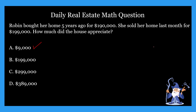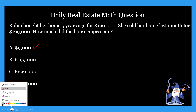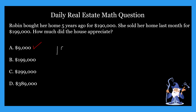There's no tricks going on here. The home appreciated $9,000. To find total appreciation, all you have to do is some basic subtraction. You're going to take $199,000, which is what she sold her home for last month, and subtract $190,000, which is what she bought her home for five years ago. And that gives us $9,000.